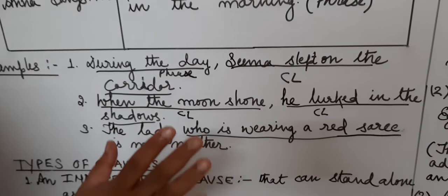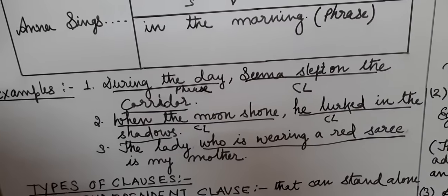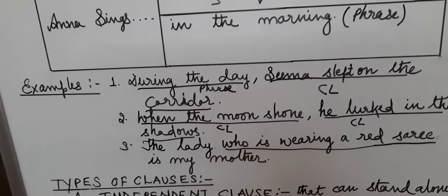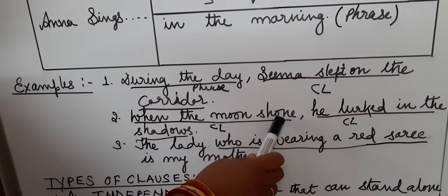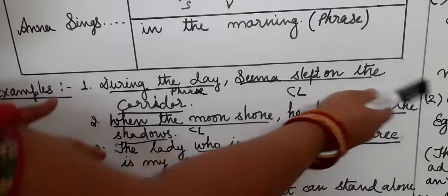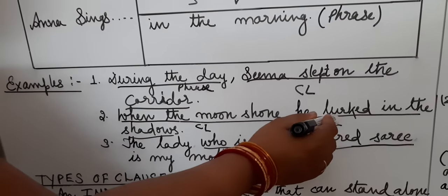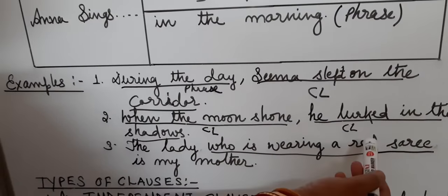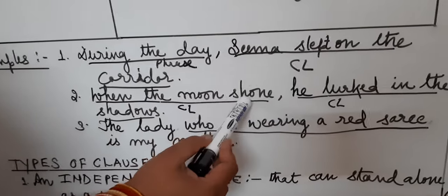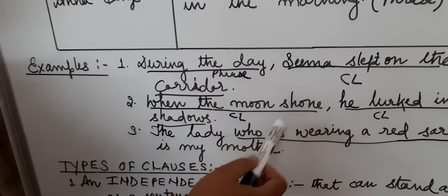In your exam it will come: identify the subordinate clause, identify the noun clause, identify the adjective clause, or the adverbial clause. You have to identify the clause. 'When the moon shone' — yeh complete meaning nahi deta hai. It is dependent on the principal clause. So this is a dependent clause, and 'he lugged in the shadows' is an independent clause — it can stand alone as a sentence. 'When the moon shone' cannot give complete meaning, so it is a dependent clause.